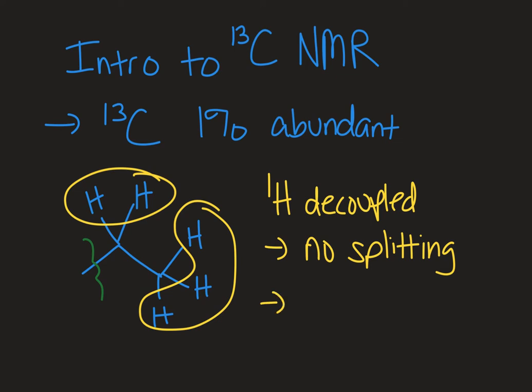The method that we use to run that spectrum, the decoupled method, also distorts the peak intensities. So as a result, we don't integrate our peaks. We see no splitting and no integration in the carbon-13 NMR.